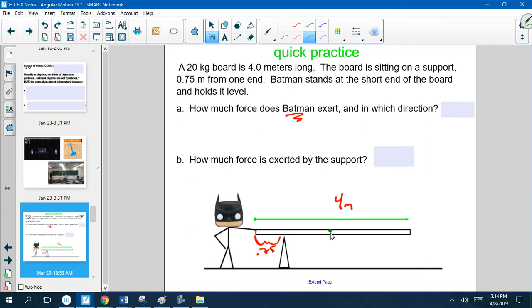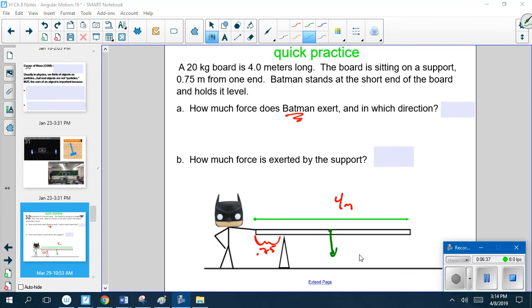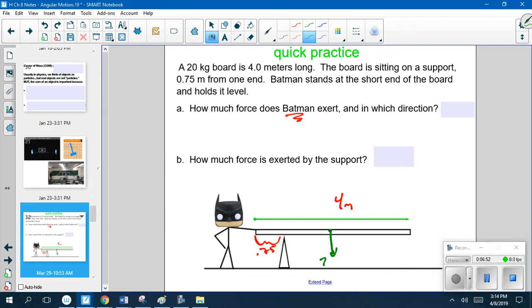Okay, so first thing you identify is where the center of mass. So it's a uniform board, so the center of mass should be right here, about the two meter mark. Here's our center of mass. It's a 20 kilogram board, so we're going to have 20 kilograms times 9.8, and that should give us a force of gravity which should equal 196 newtons.